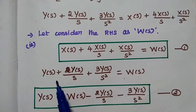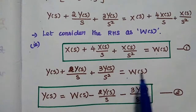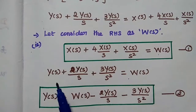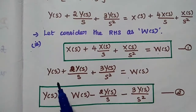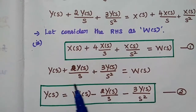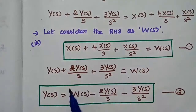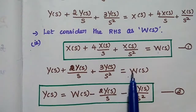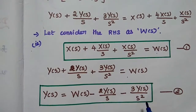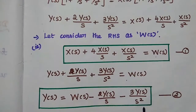In the next step, we have to keep Y of S alone and move all other terms to the right hand side, because Y of S is the actual output of the system. So, Y of S is equal to W of S minus 2Y of S by S minus 3Y of S by S squared. Consider this as the second equation.